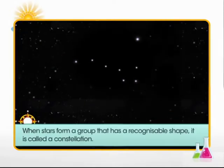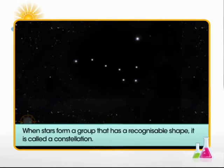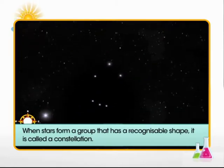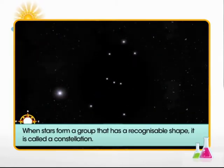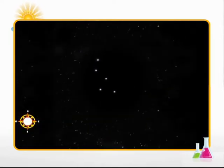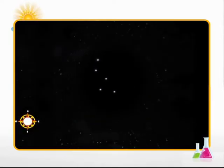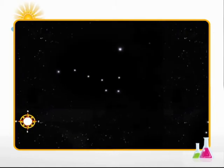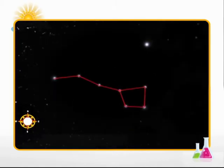Let's try and find shapes made by the stars in the sky. When stars form a group that has a recognizable shape, it is called a constellation. The shapes of constellations resemble objects familiar to us. Oh, this group of stars looks like a huge ladle.